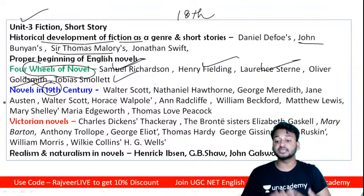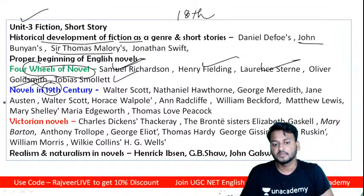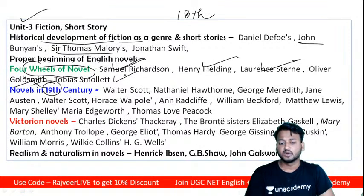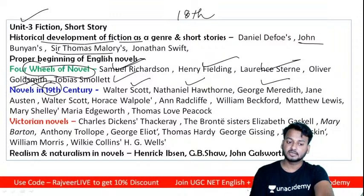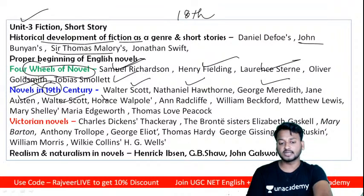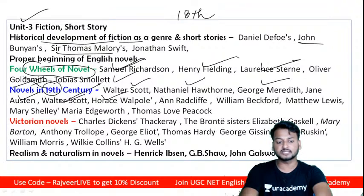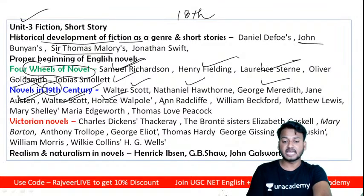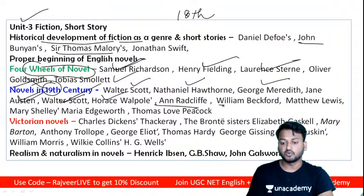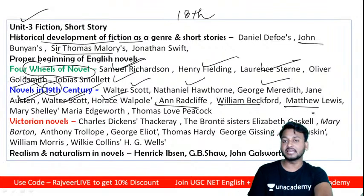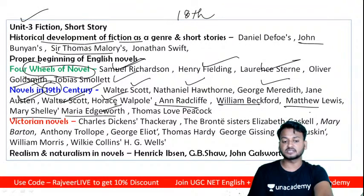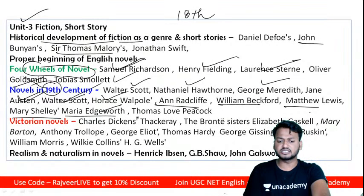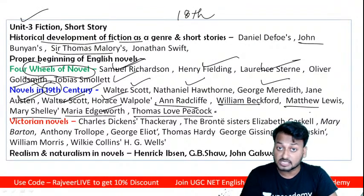In the 19th century — the Romantic period — novelists include Walter Scott (the historical novelist), Jane Austen (domestic novel), Horace Walpole (Gothic writing), Ann Radcliffe (Gothic novel), William Beckford (Gothic novel), Matthew Gregory Lewis (Gothic), Mary Shelley ('Frankenstein,' Gothic writing), and Thomas Love Peacock (romance).